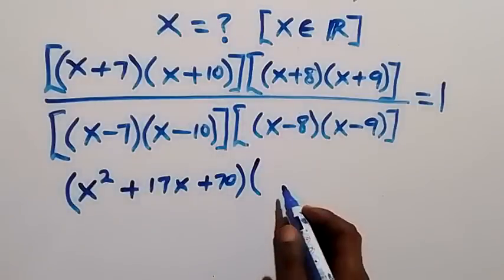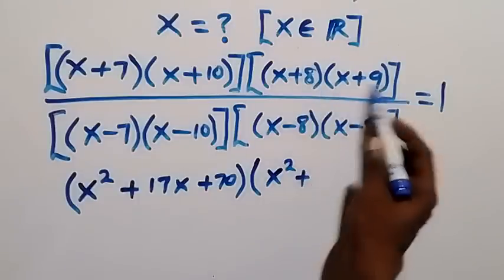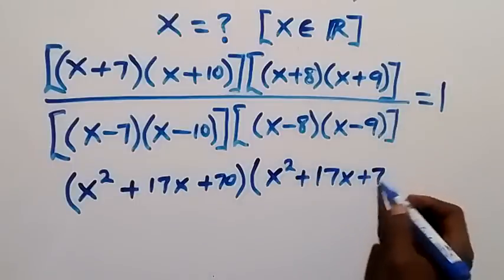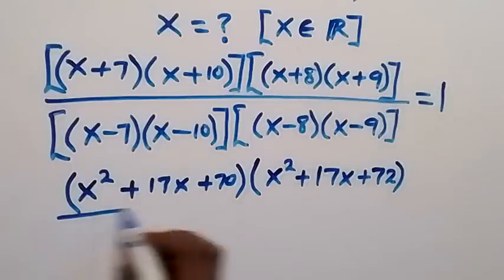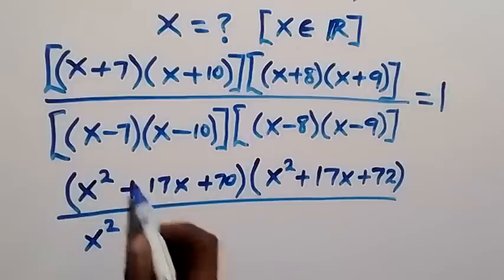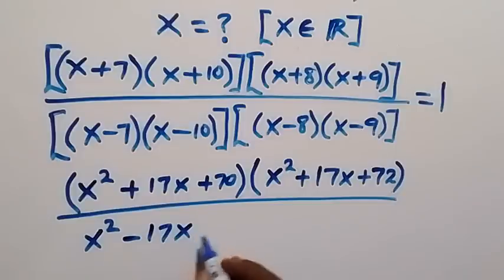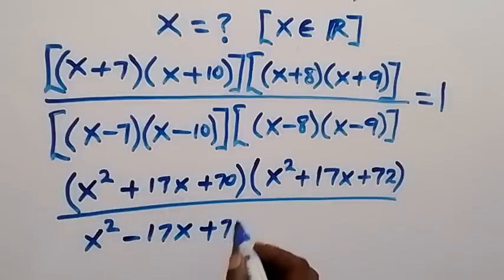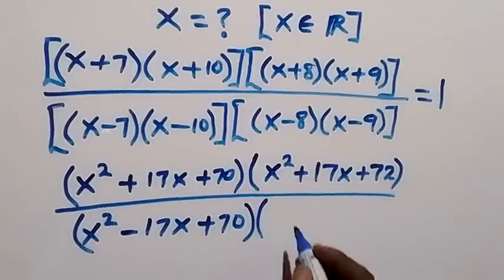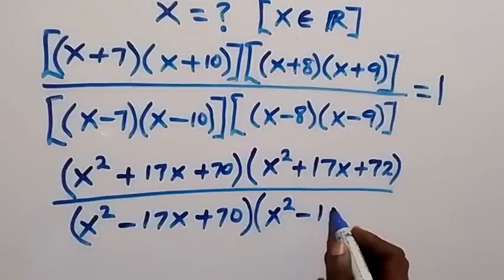Then 7 times 10 gives plus 70. So the first bracket expands to x squared plus 17x plus 70. The second bracket gives x squared plus 9x plus 8x, that's plus 17x, then plus 72. In the denominator, we expand to get x squared minus 17x plus 70, and x squared minus 17x plus 72.